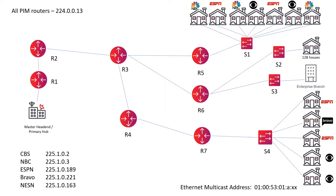PIM routers understand that traffic is flowing from the source to the destinations, and they want to make sure they're only replicating traffic as close to the destination as possible, running PIM sparse mode to make this happen. For PIM dense mode, basically everything is broadcast everywhere, and if a router doesn't want the traffic, it says quit sending me that. In PIM sparse mode, we only send the traffic to the routers that are asking for it - to the devices that ask for the traffic.